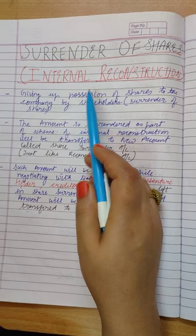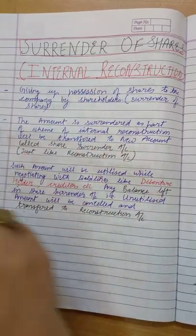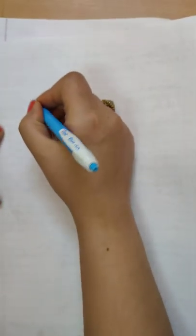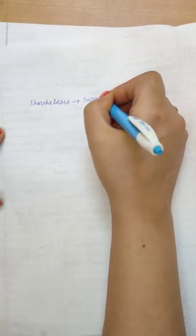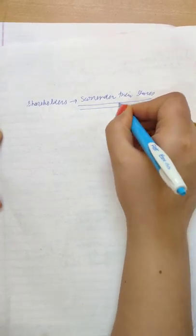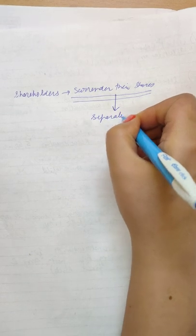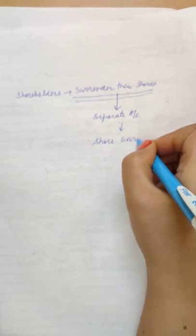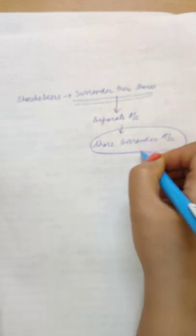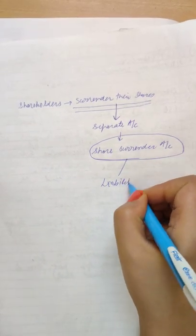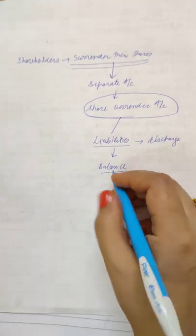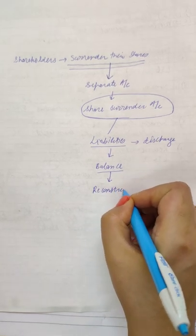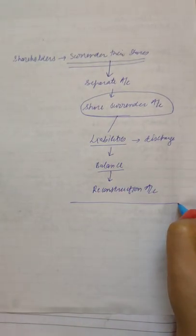Now let us understand the concept. What do you mean by surrender of shares? In surrender of shares, shareholders basically surrender their shares as a scheme of internal reconstruction. These surrendered shares are transferred to a separate account called the Share Surrender Account. From that surrendered share account, we discharge liabilities as per the language of the question. And if any balance remains in the share surrender account, we transfer it back to the Reconstruction Account. That is basically the entire concept of the share surrender account.